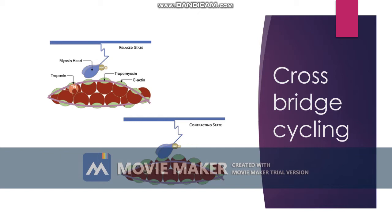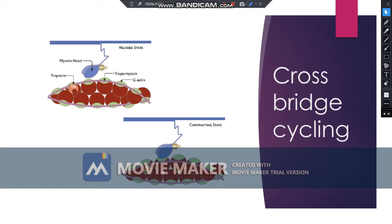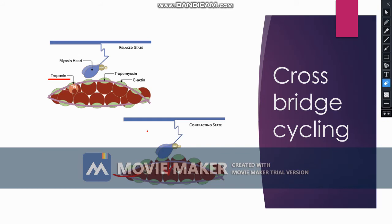Now we can explain the role of calcium in muscle contraction. As you can see in the picture, there is troponin, and troponin basically blocks the actin via tropomyosin, which is a thin line that covers the actin. This only occurs when there is no calcium present in the sarcomere. However, once calcium enters the sarcomere, this results in a shifting of the tropomyosin away from the actin, allowing the myosin heads to bind to the actin. This causes a contractive state, and if there's no calcium present, this is called a relaxed state.